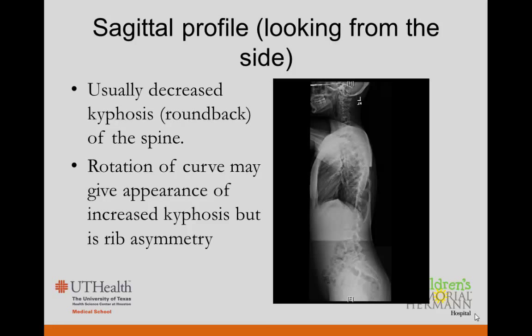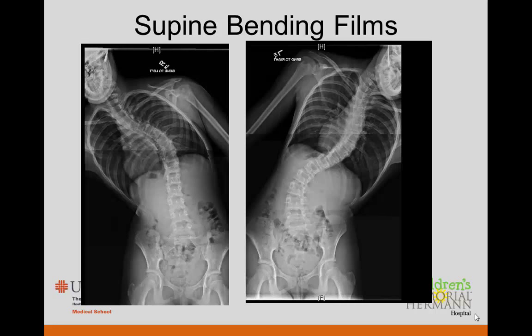We also look at the side view, where patients with scoliosis typically have a decreased kyphosis or flattened back. The ribs may be very prominent and give the appearance of a round back even though the spine itself is flattened. Sometimes the physician will also order supine bending films — where the patient bends side to side — to assess how flexible the curve is, which can help guide treatment.